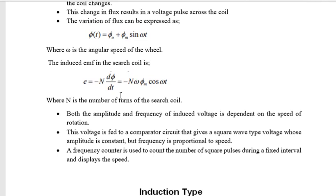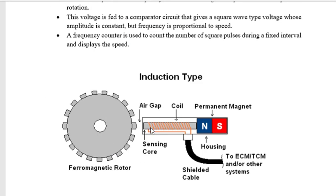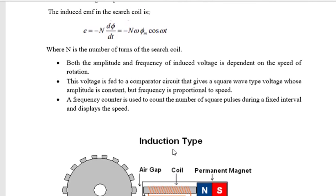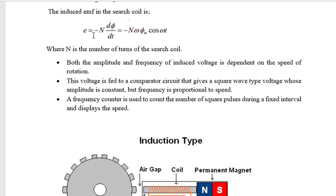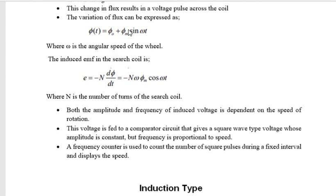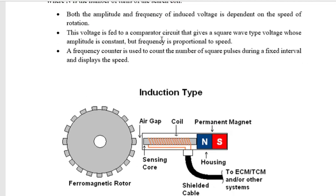The induced EMF in the search coil: when there is a change in flux linkage, as per Faraday's law, there will be an EMF induced. The induced EMF is given by e = -N dφ/dt. This equals -N times the derivative with respect to t of φₘ sin(ωt). φ₀ is a constant initial flux, so this becomes zero. The result is -Nφₘω cos(ωt), where N is the number of turns of the coil.